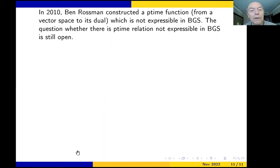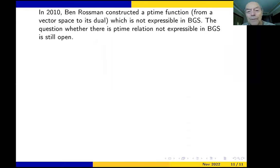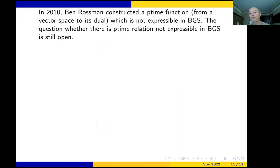In 2010, Ben Rossman constructed a polynomial time function — polynomial time on structures — where the structure goes from a vector space to its dual. Even though it is polynomial time, it is not expressible in BGS. This was the first example, and it is essentially the only one, though Ben has variations of it. The question of whether there exists a polynomial time relation not expressible in BGS is still open, though the answer is almost surely yes.